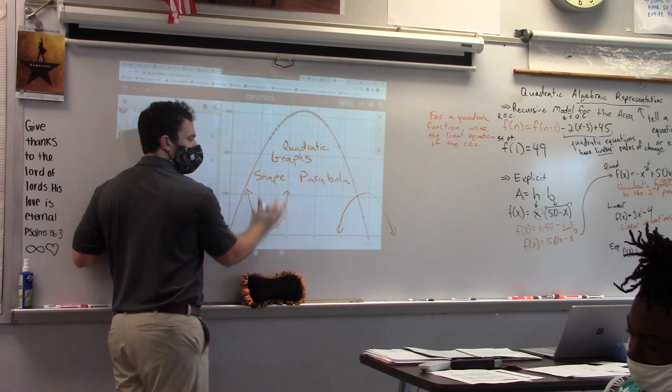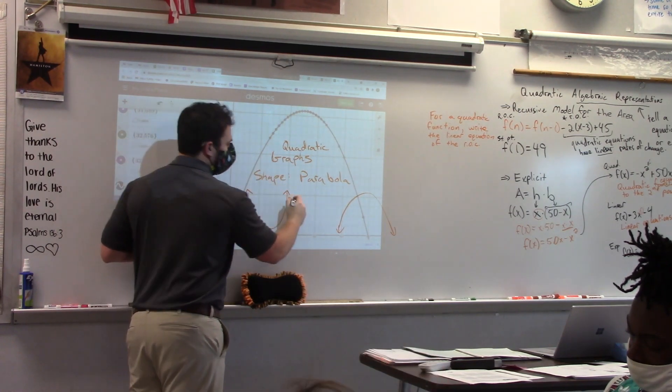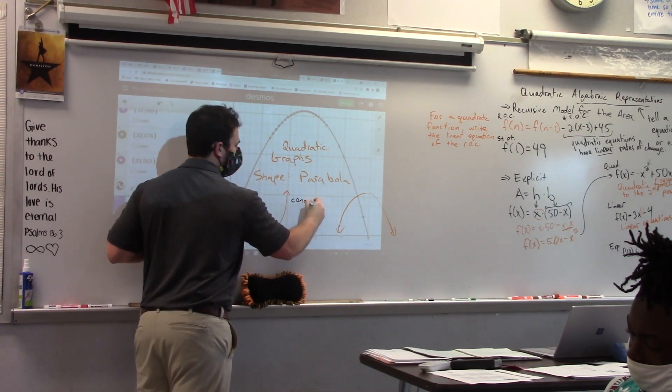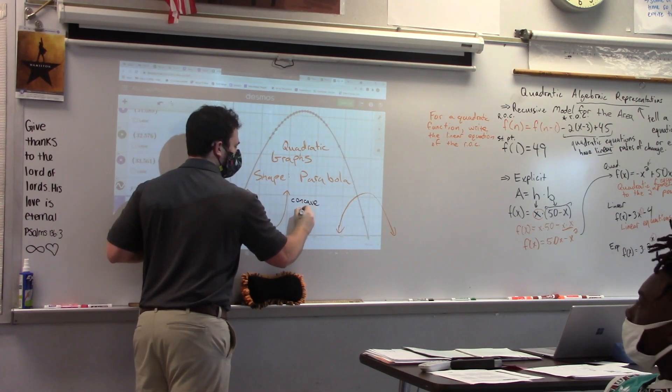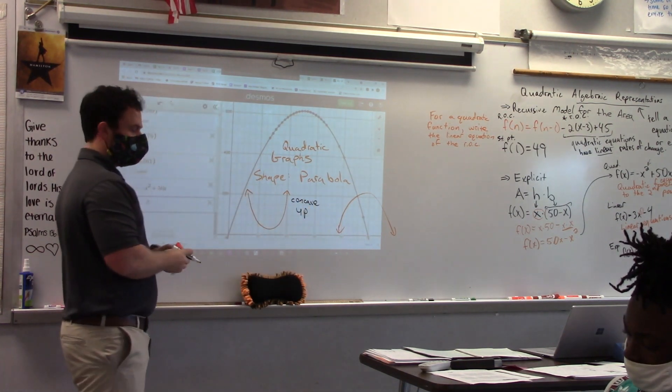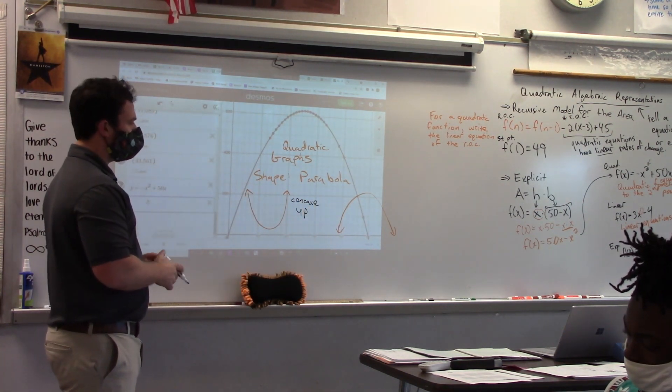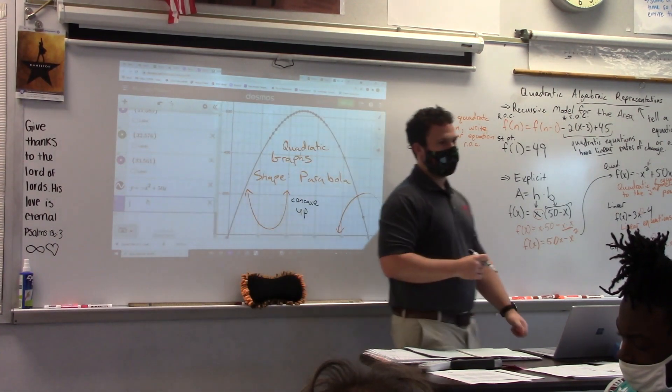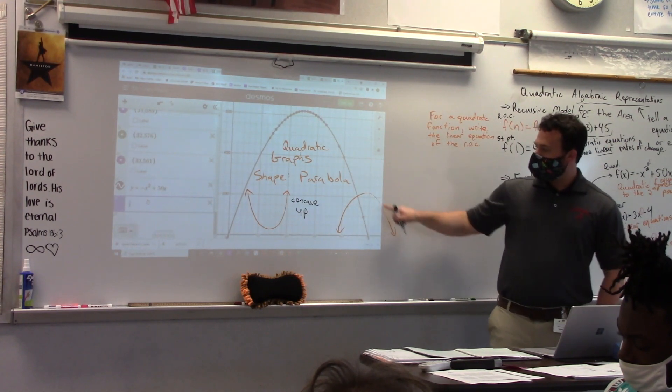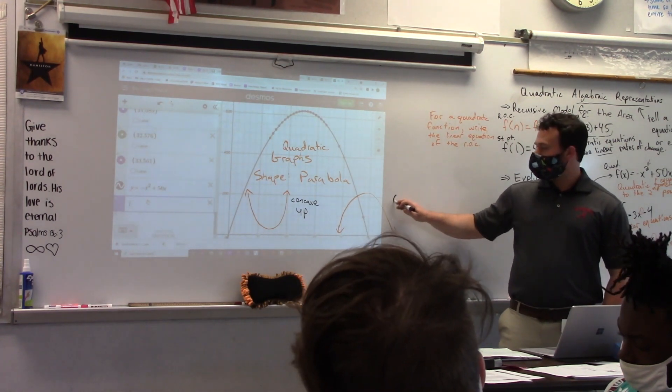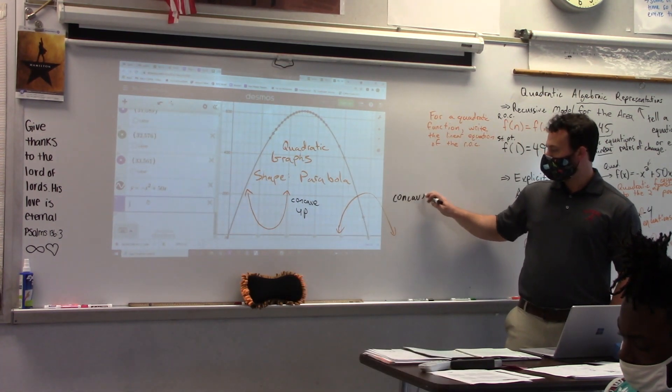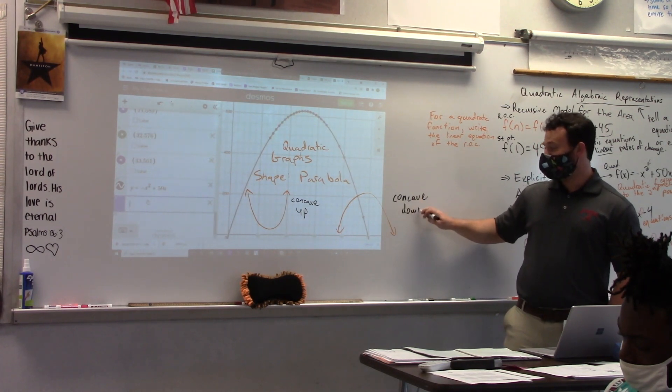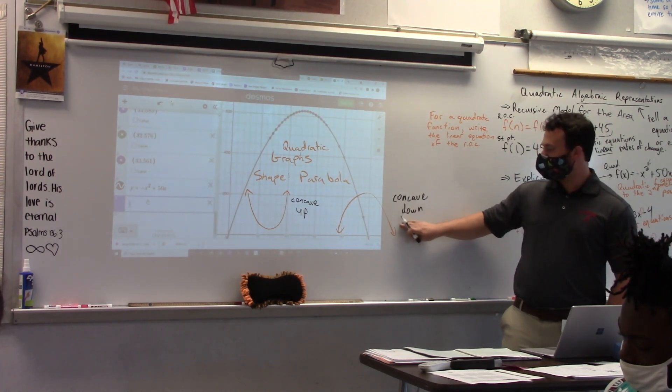This right here, where it looks like a U facing up, this is known as concave up. My high school teacher used to tell me it's concave up like a cup. That's how we remembered it. This one that looks upside down, any guesses? Concave down like a frown. That's actually exactly what we said.